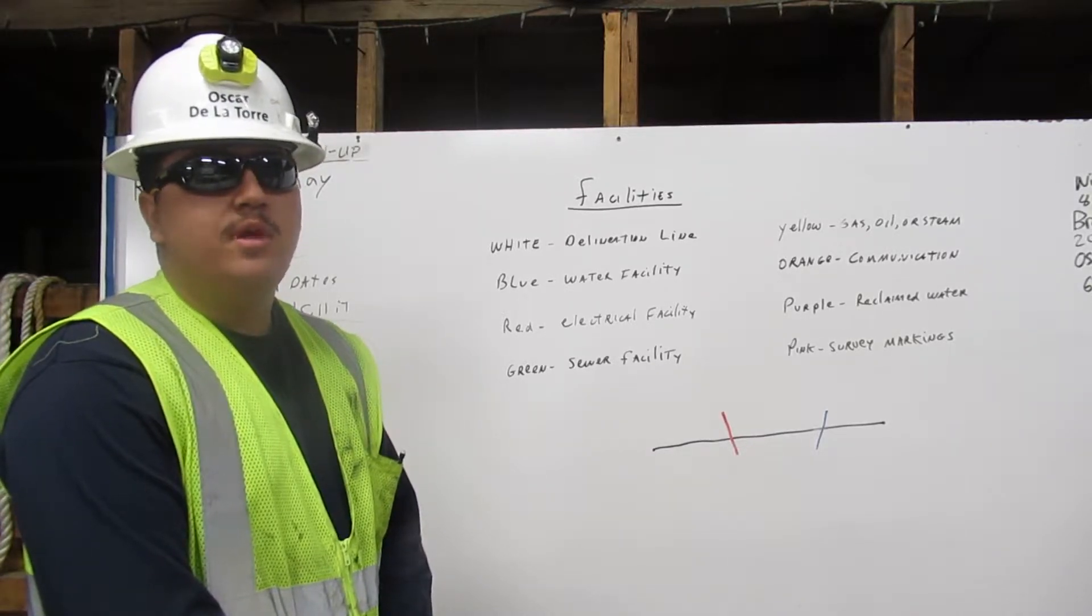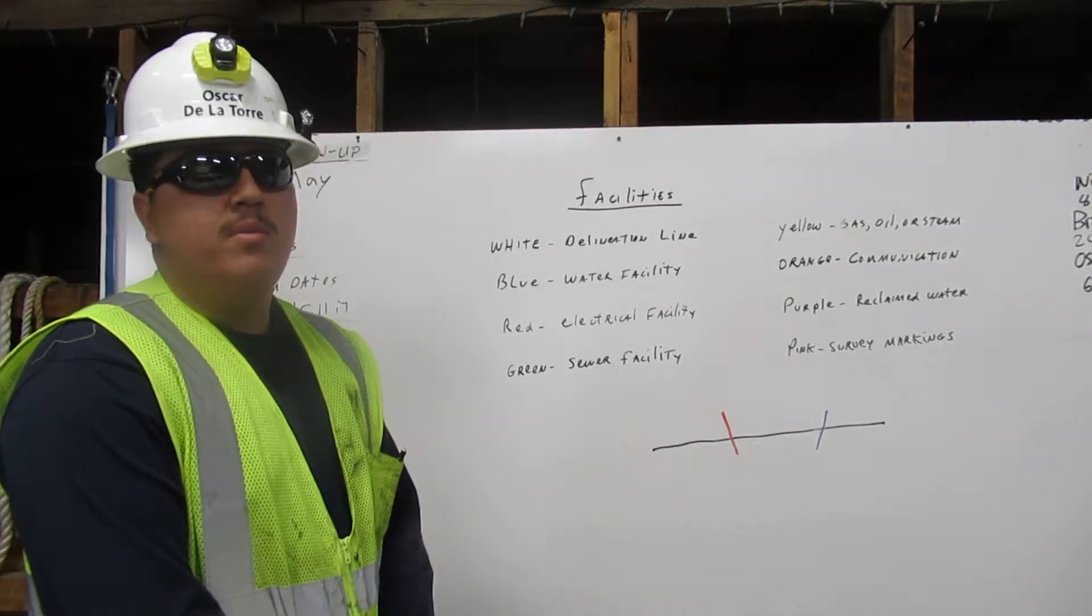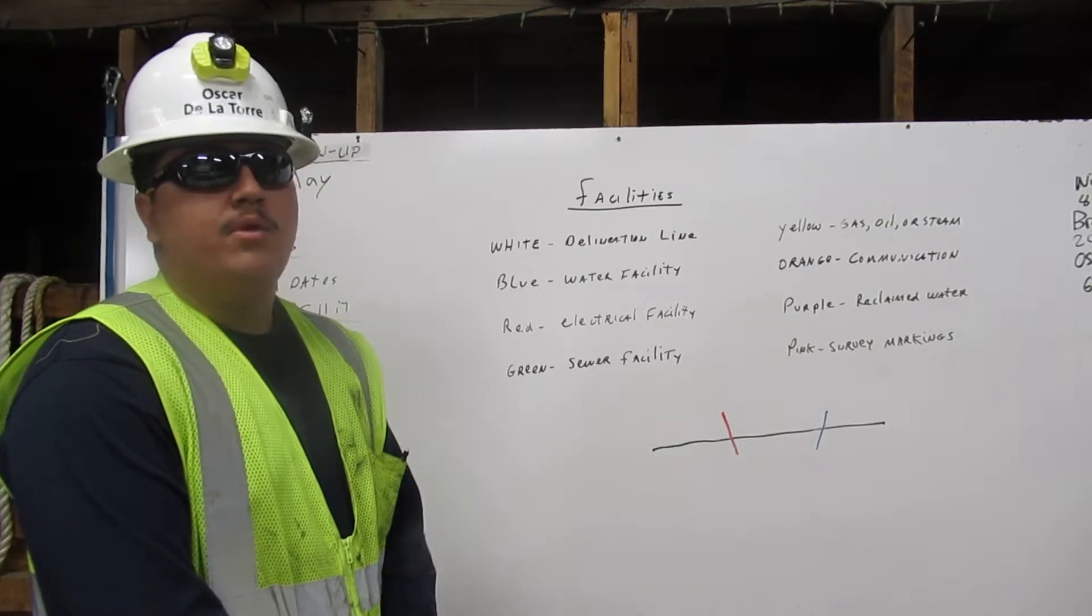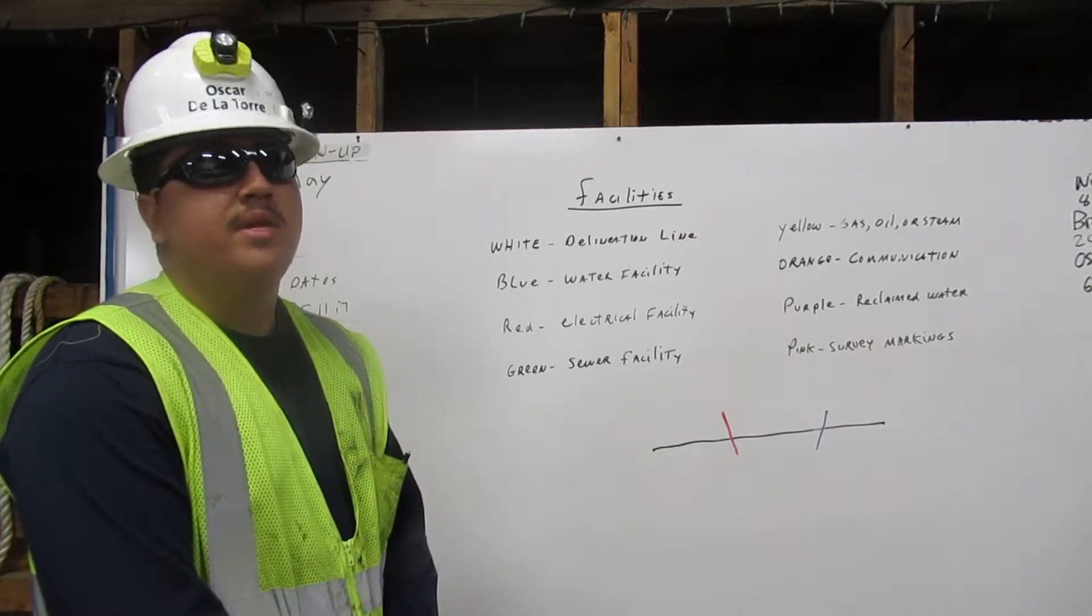If our dig is going to come into conflict with an existing substructure, we will be made aware of it by a line of a specific color that will be crossing our delegation line. Let me explain.